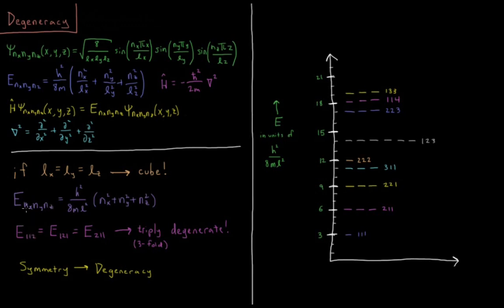That's the same energy as if x and z equal 1, and y equals 2. Or nx equals 2, and y and nz equal 1. e112 equals e121 equals e211. So this is a state which we would refer to as triply degenerate. All three of these states have the same energy. It is threefold degenerate.